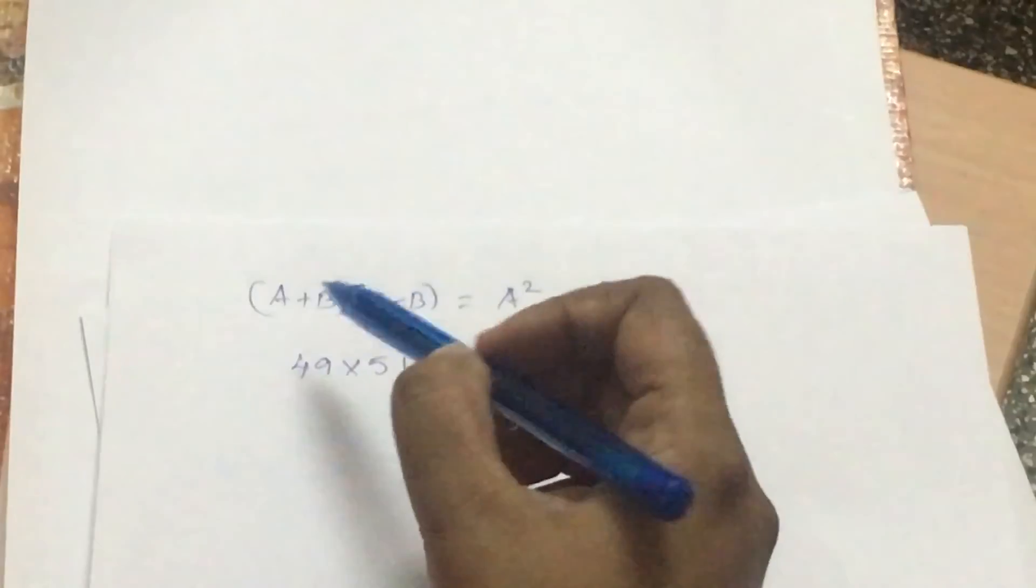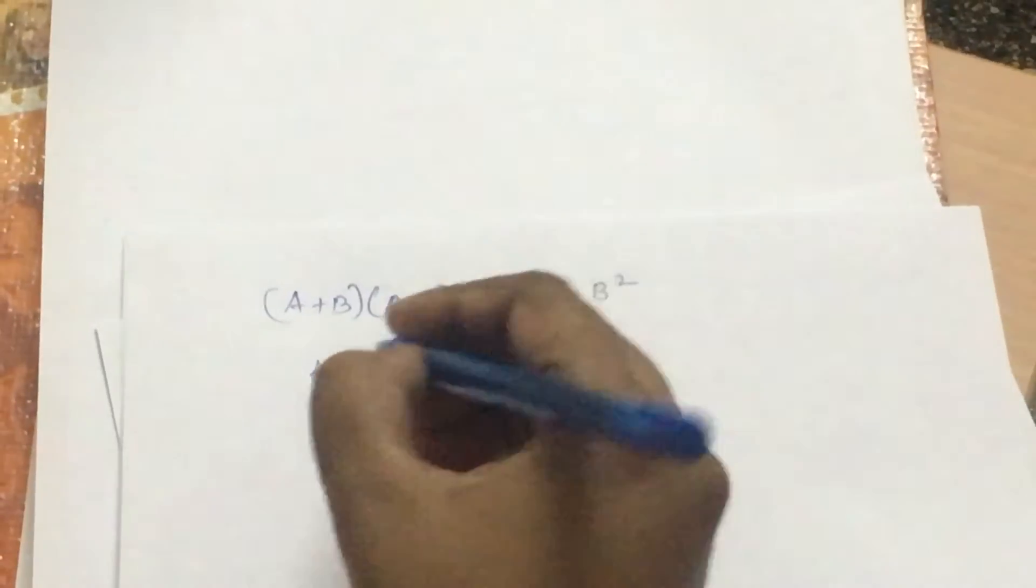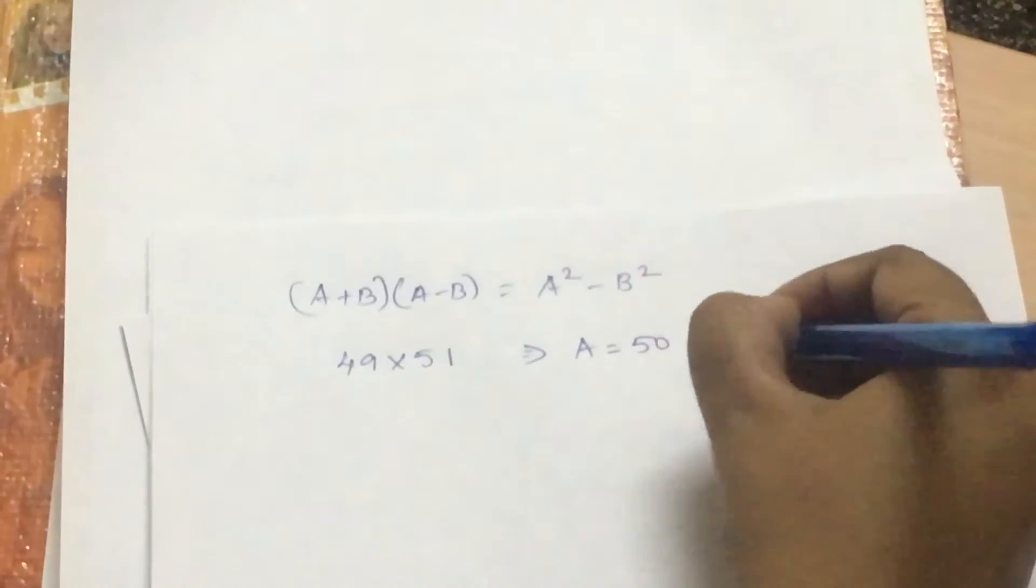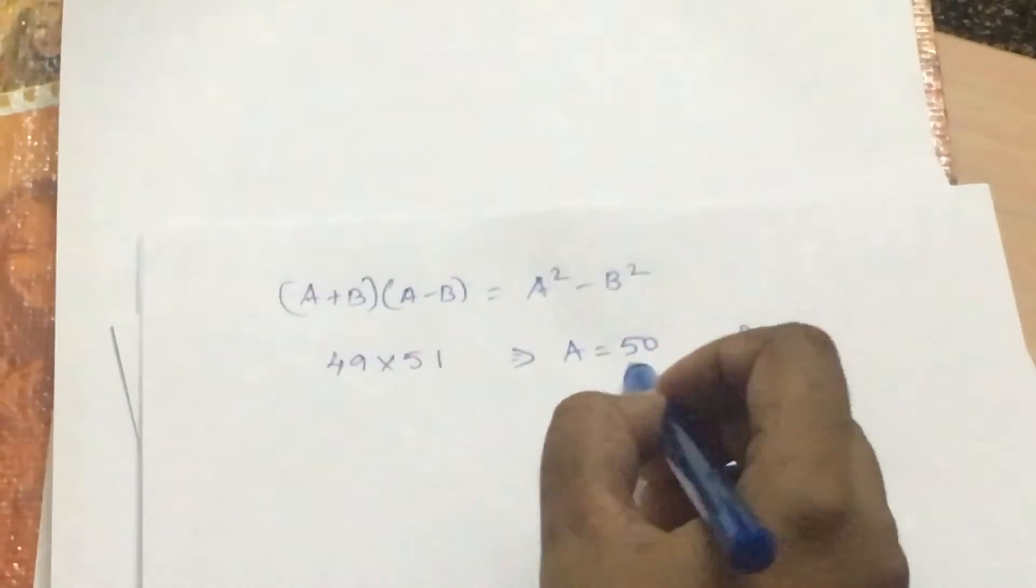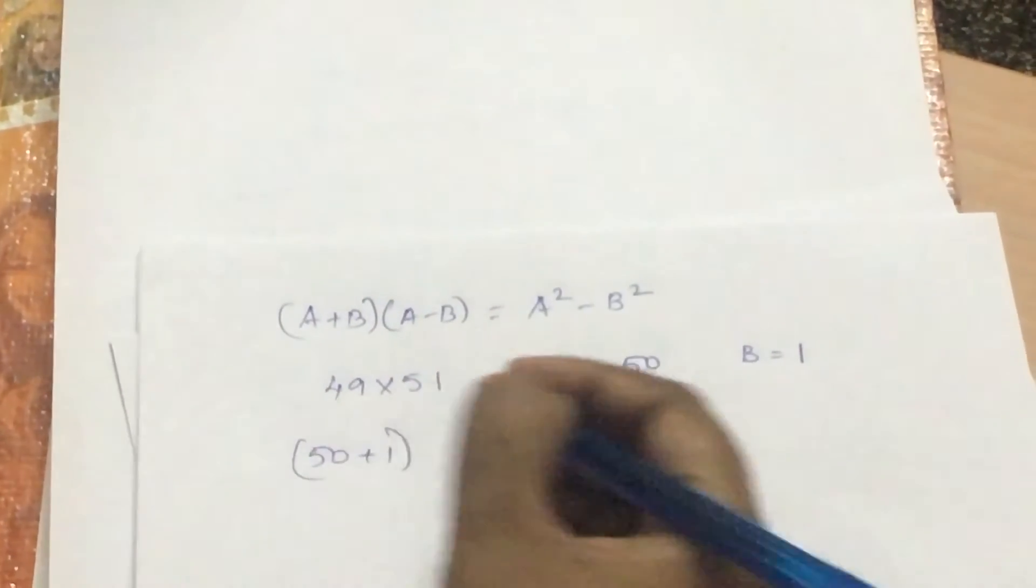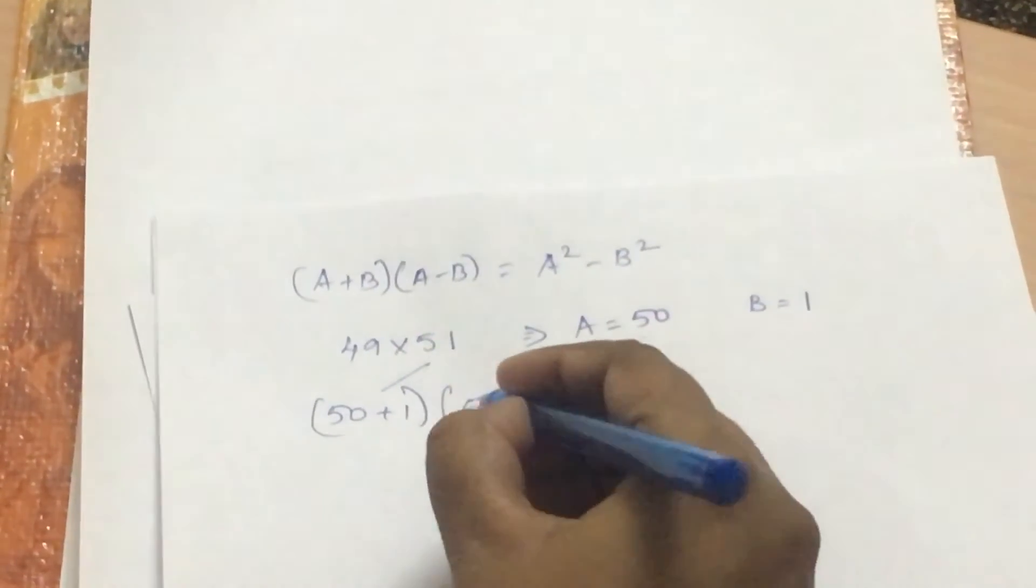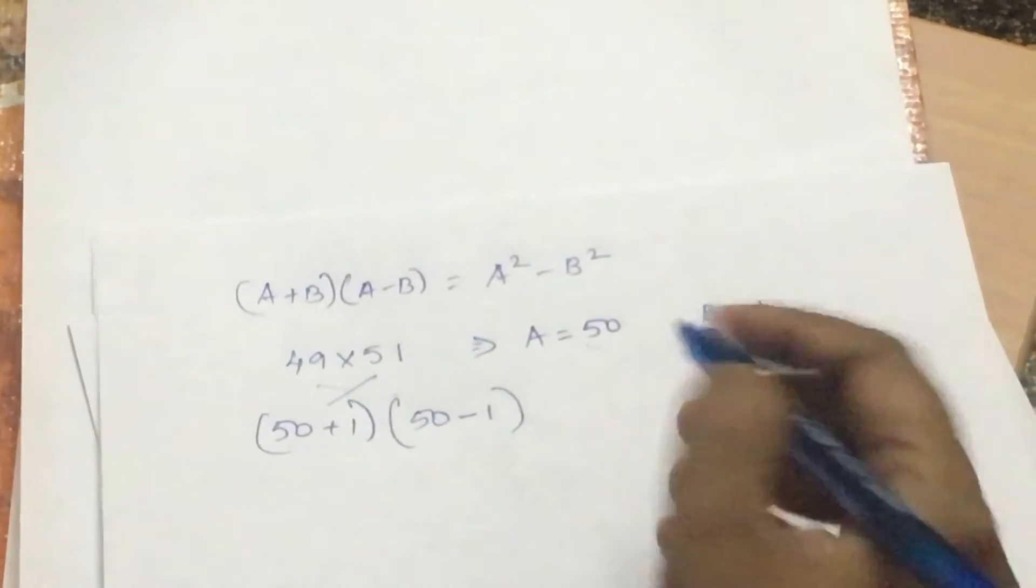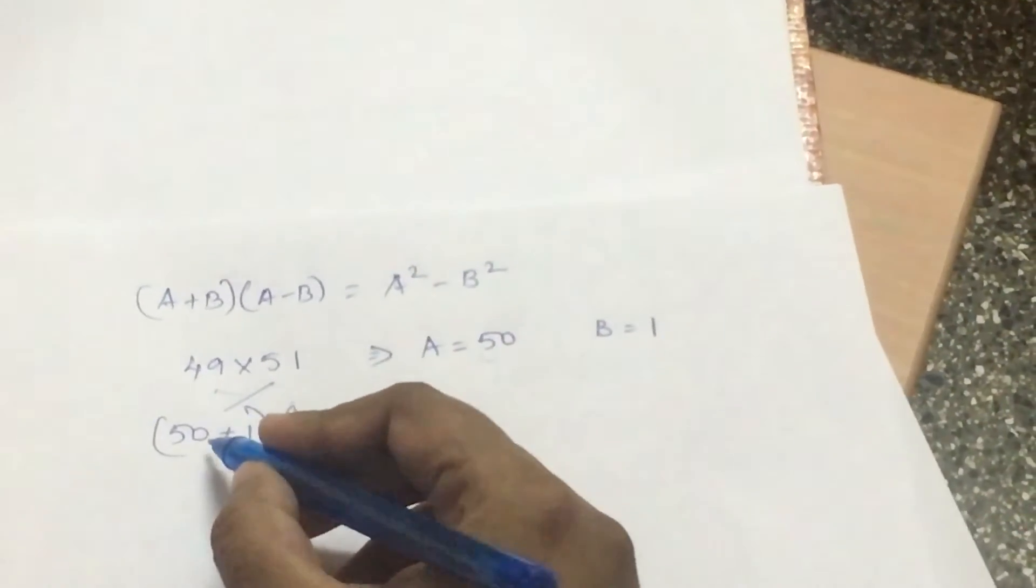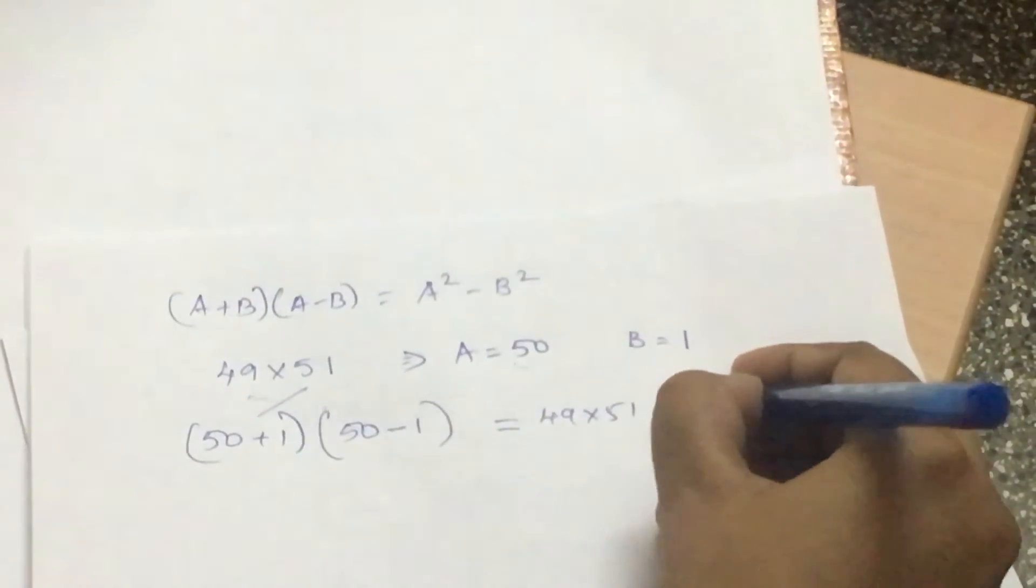Now, I need to come up with two numbers which resemble a and b in both the multiplicands. Let's assume a equals 50 and b equals 1. If I substitute 50 for a and 1 for b, I end up with 50+1 which is 51 and this is 50-1 which is 49 incidentally. That can be written as according to the identity a² - b². Before I do that, let's just do the long multiplication and come up with the answer which is 49 into 51 and that's 2499.